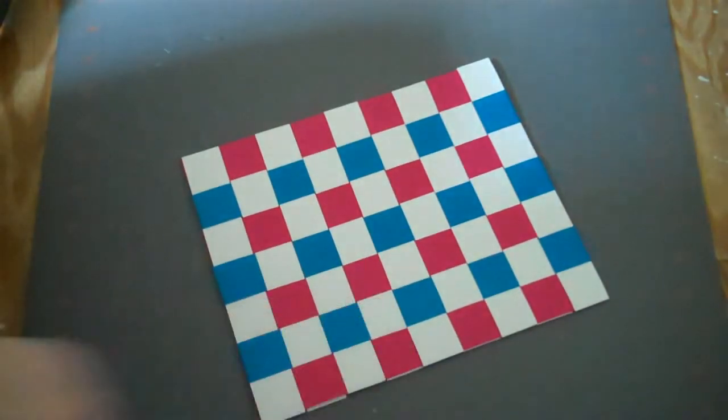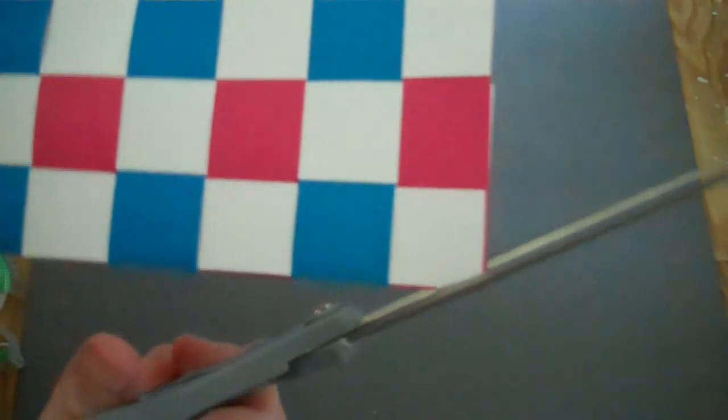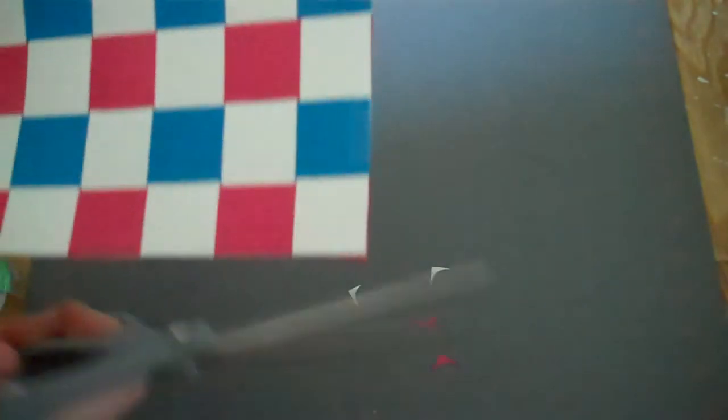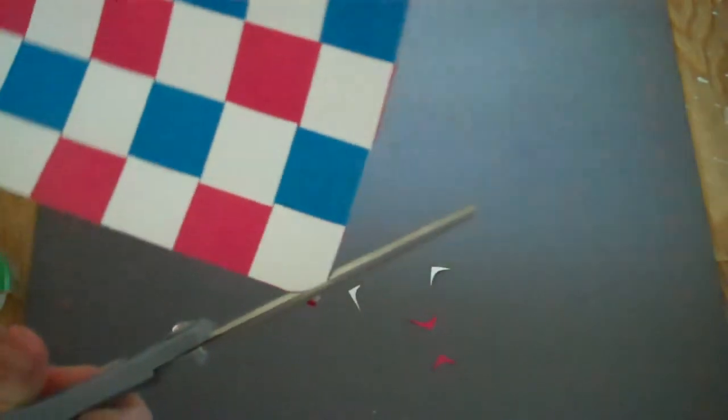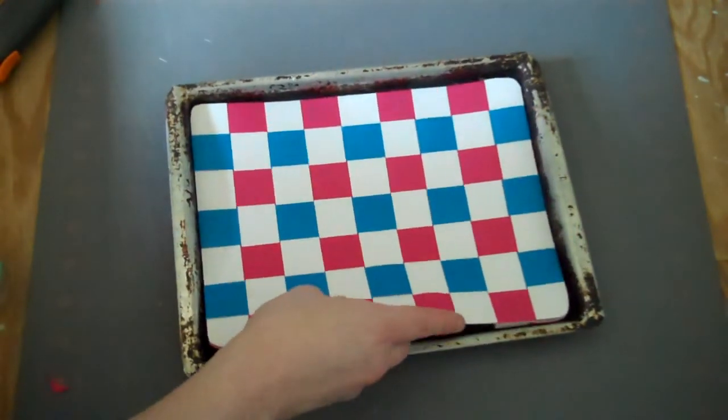Then just flip it back over. If your tray is like mine, you might have to round the edges just a little bit to make it fit. Then just slide it right into your tray.